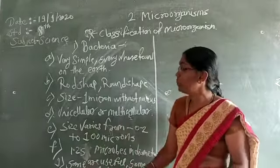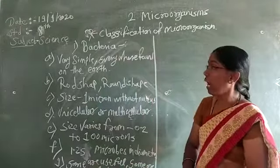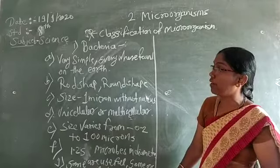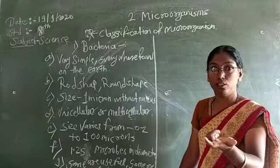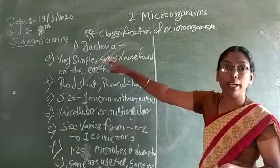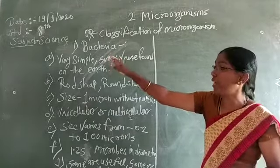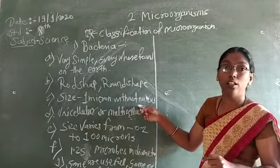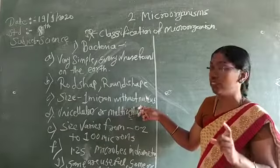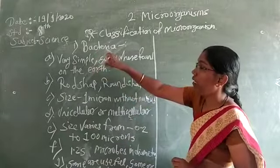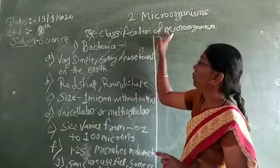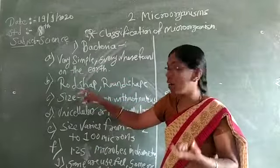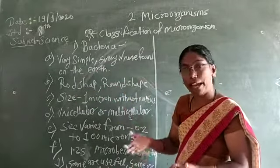Up to 6 to 7 points we can see for bacteria — I will repeat them so you can write them down. These point-wise answers are very important when in your papers you write about bacteria or explain bacteria. You can write the answer point wise. These points are very important. I will repeat the points again. Bacteria is our first classification of microbes. They are very simple, found everywhere. How the shape — rod-like shape, round shape, spherical shape, etc.